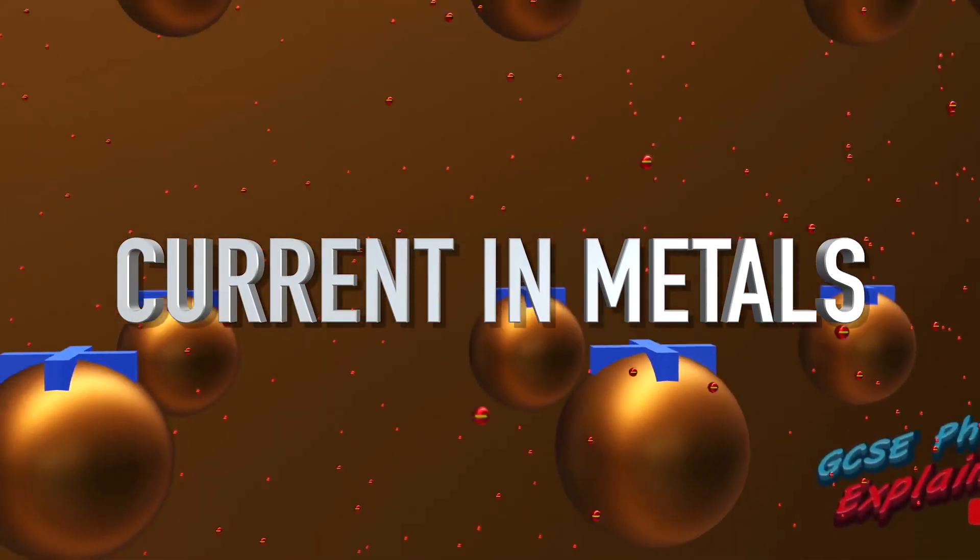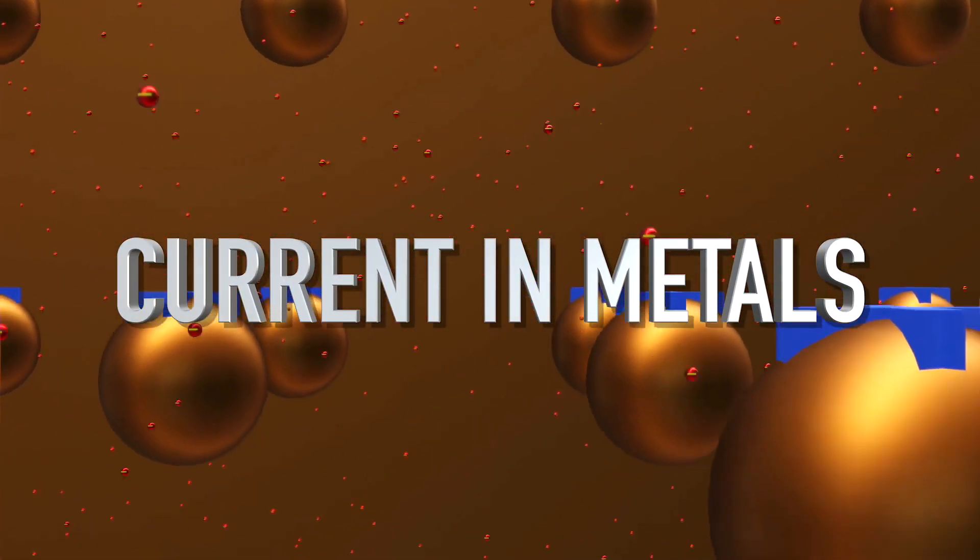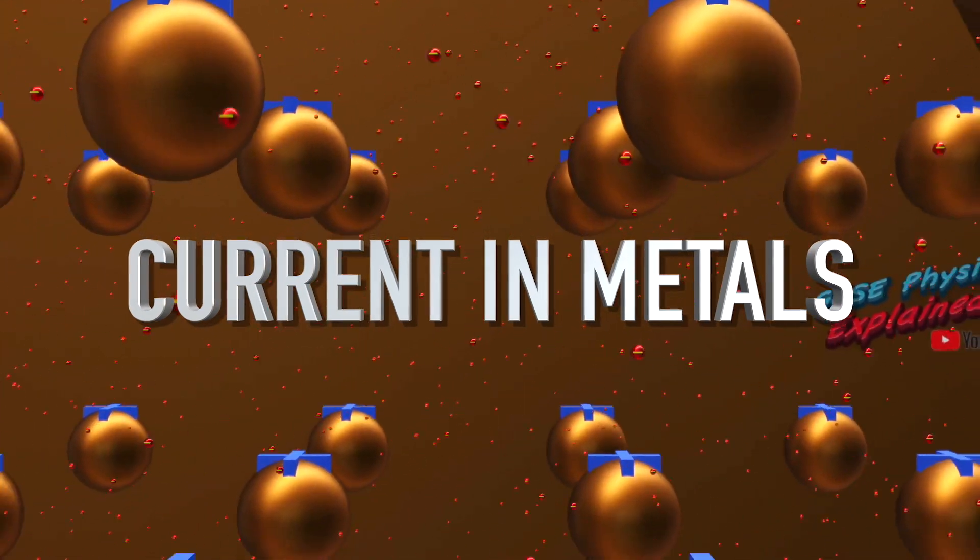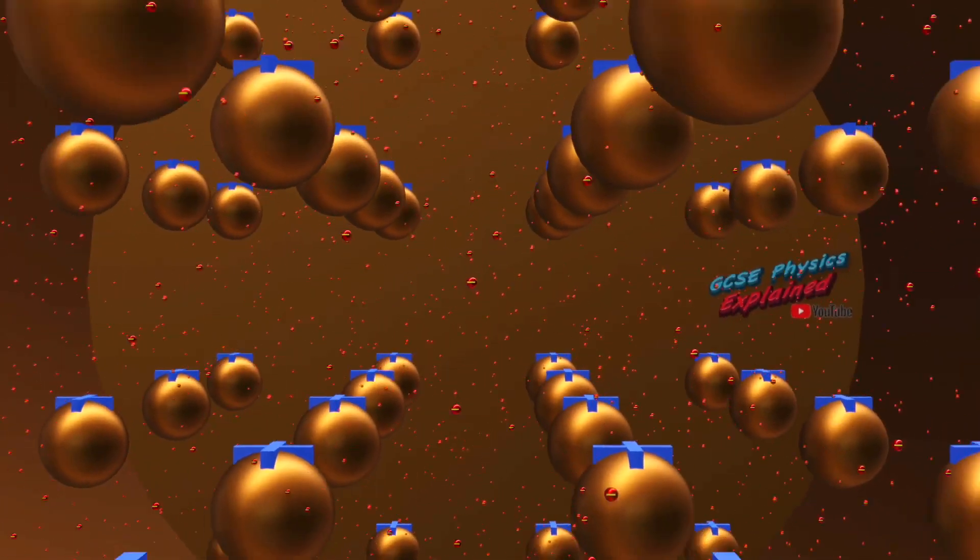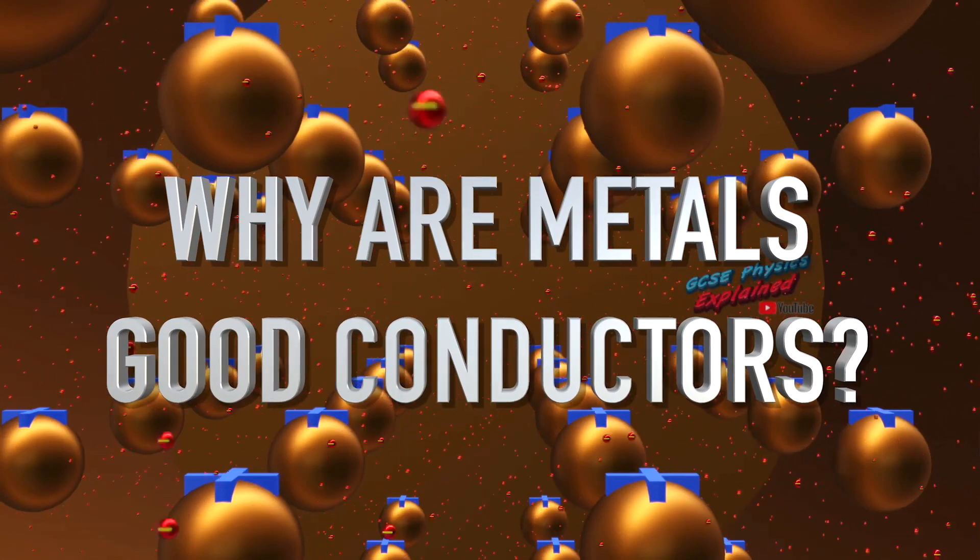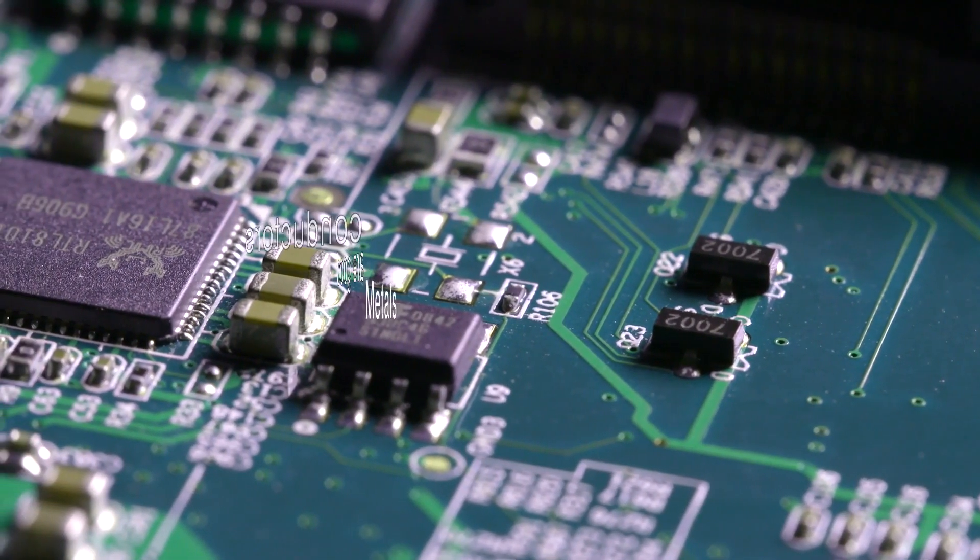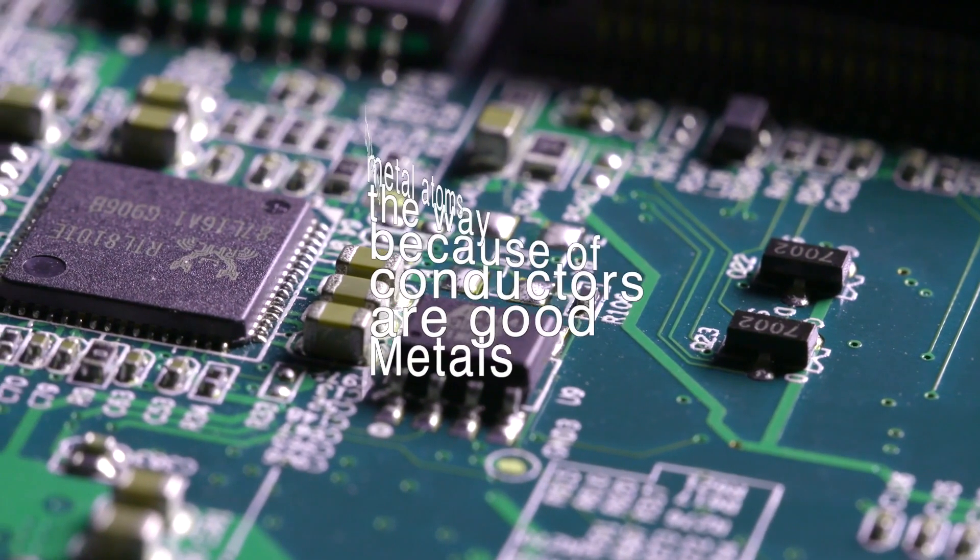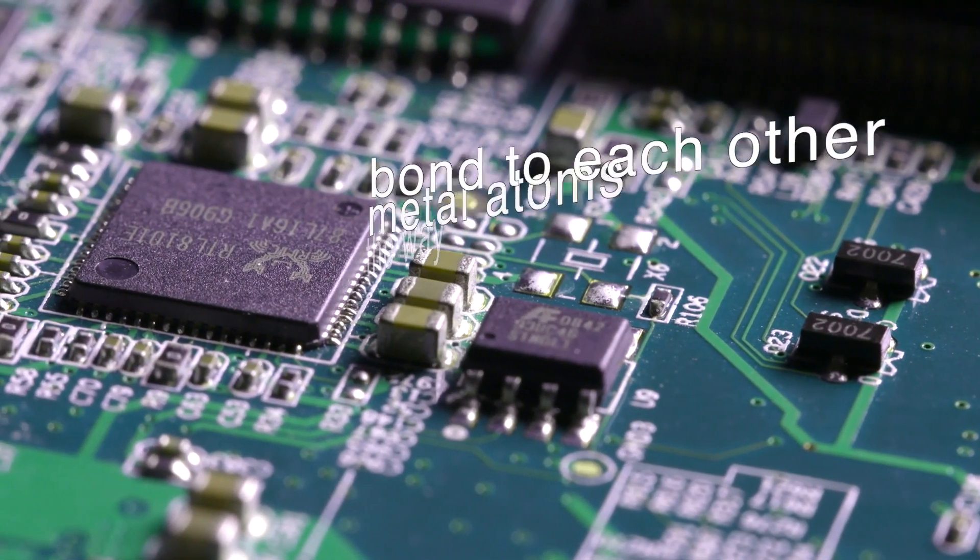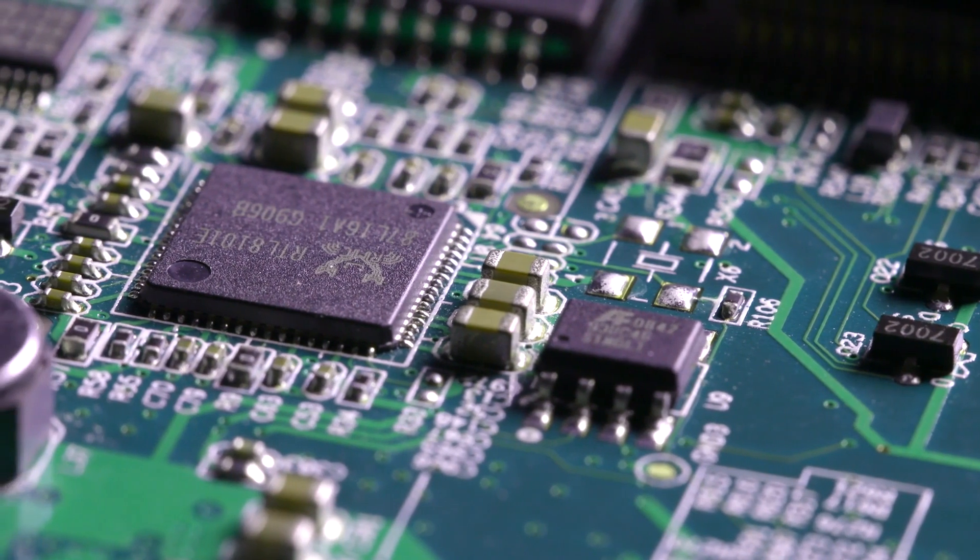Have you ever wondered about electric current in metals? What it is and what causes it? Maybe you've wondered why metals are good conductors. Well, it turns out metals are good conductors because of the way metal atoms bond to each other, called metallic bonding.